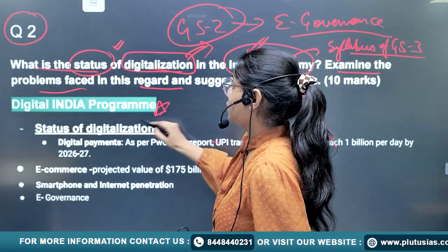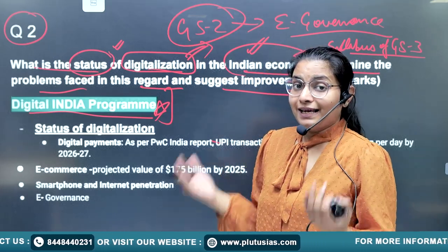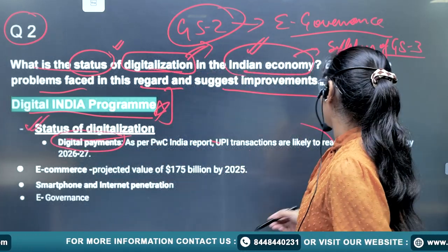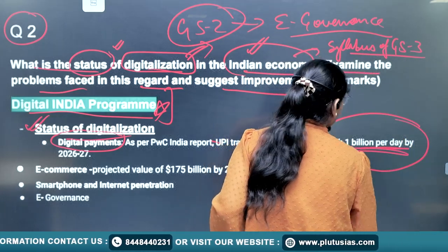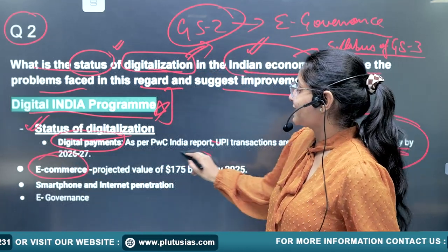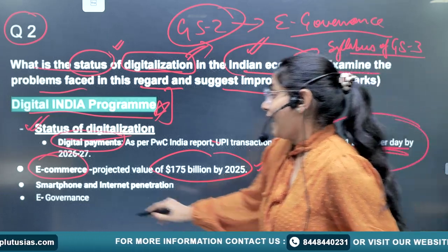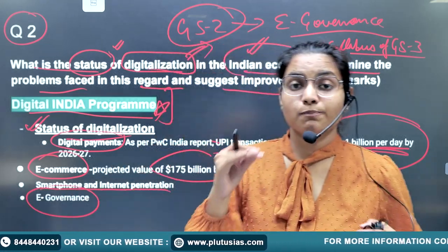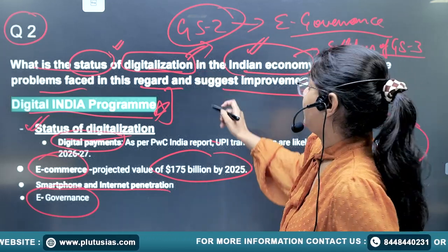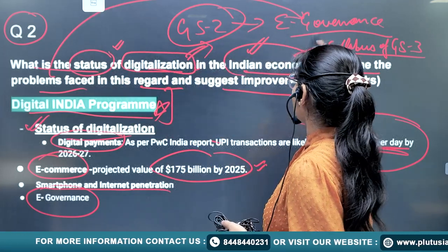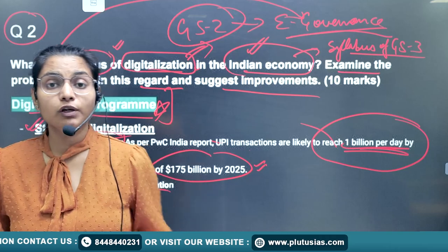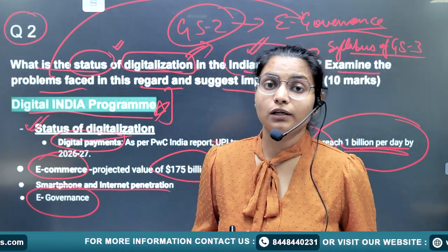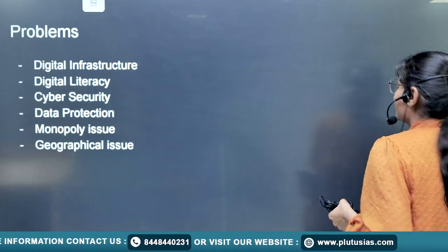To discuss the status of digitalization, mention the Digital India program launched in 2014 alongside Make in India. Then cite current data: digital payments have grown to around 1 billion transactions per day; e-commerce is projected at around $175 billion by 2025; smartphone and internet penetration is rising; and e-governance — various government schemes and portals are now operating digitally.